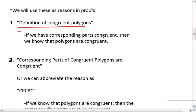The first is the definition of congruent polygons. So if you are able to show that all the corresponding parts for two polygons are congruent, then we'll be able to conclude that the polygons themselves are congruent, and that will be by the definition of congruent polygons.